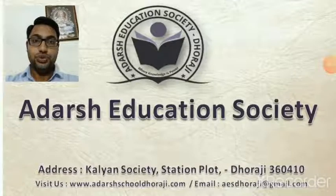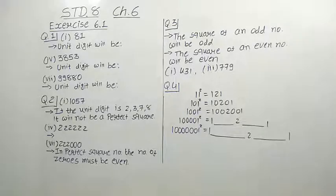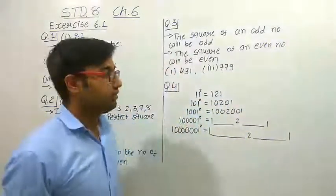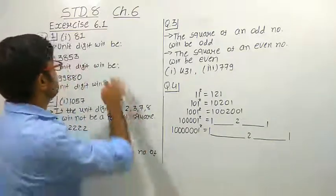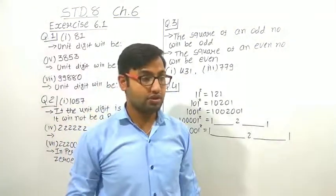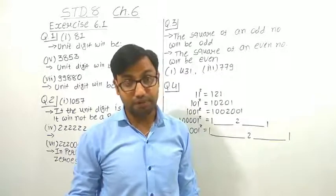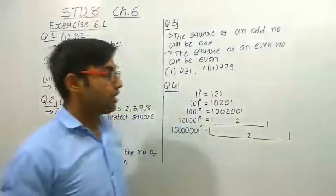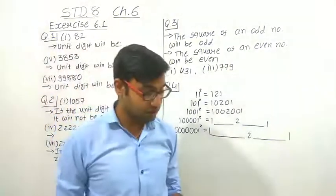Namaskar. Welcome to Adars Education Society. Hello students. Today we will start Exercise 6.1. This is the exercise of Standard 8, Chapter 6: Square and Square Roots. So till now we have studied about the properties of square numbers and some interesting patterns of square numbers. Here we have to study some questions based on whatever we have studied.